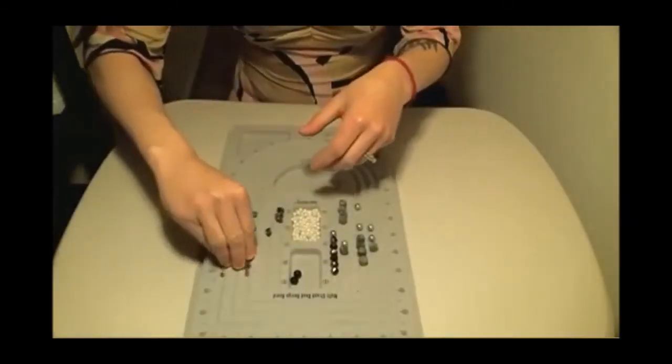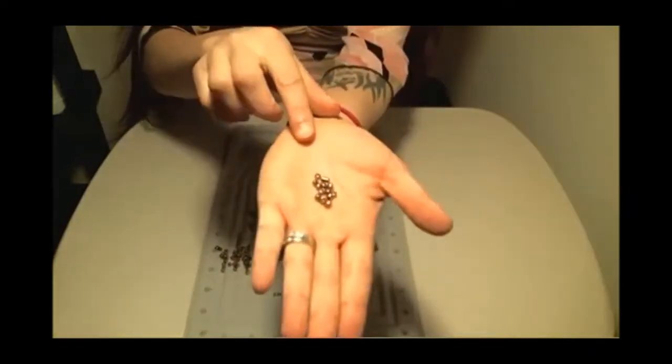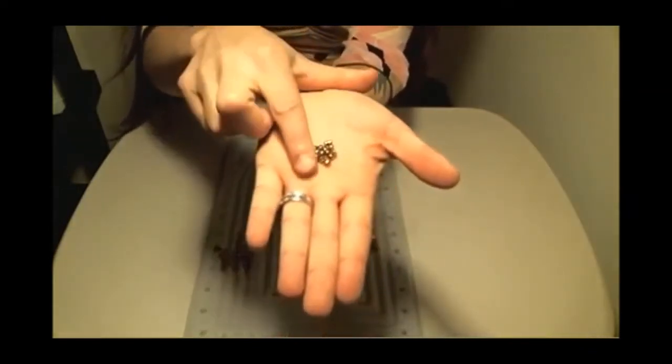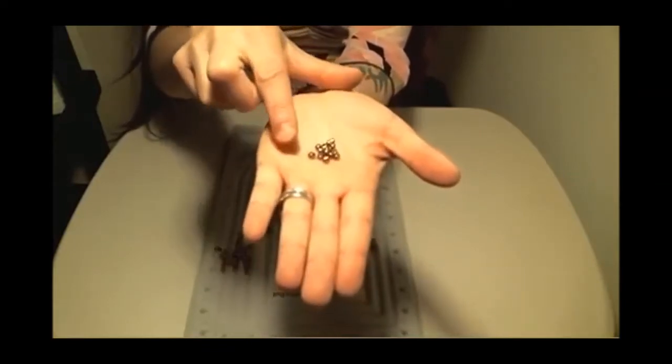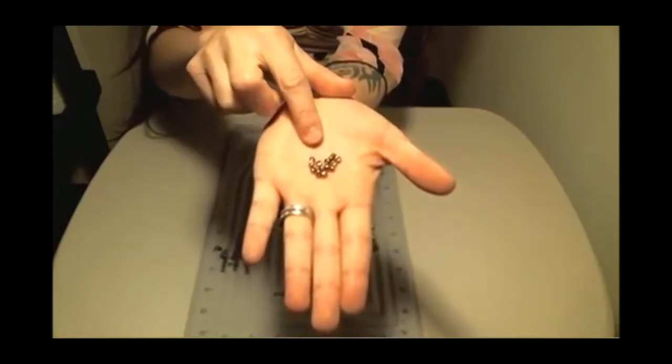And then these are the seed beads that I have for spacing. They're kind of like a gold bronze color. You can use whatever color you want, whatever one you think looks best with the green and black. I thought these looked kind of cool, so I'm going to go with these ones.